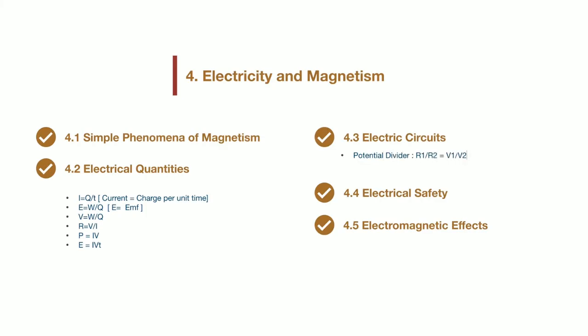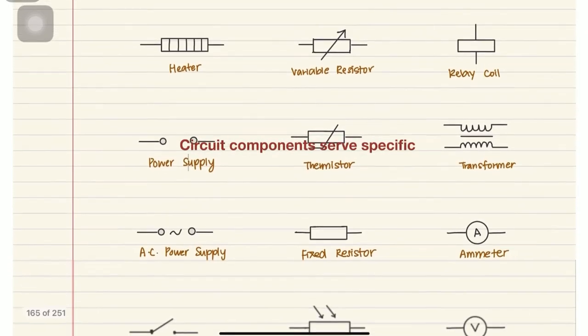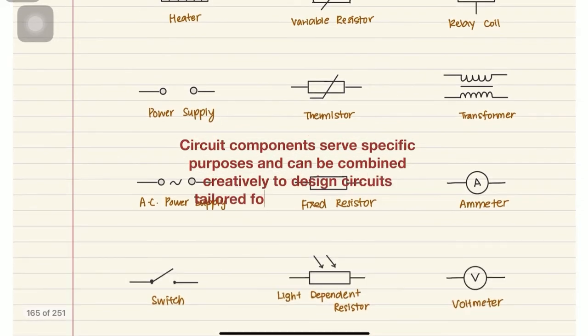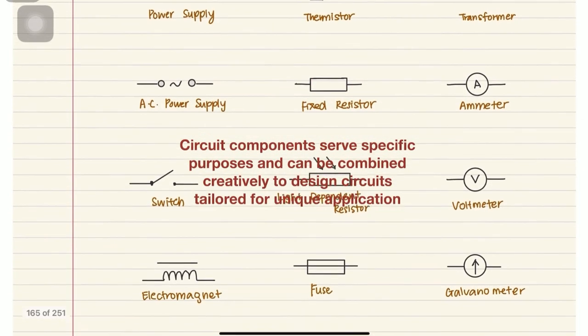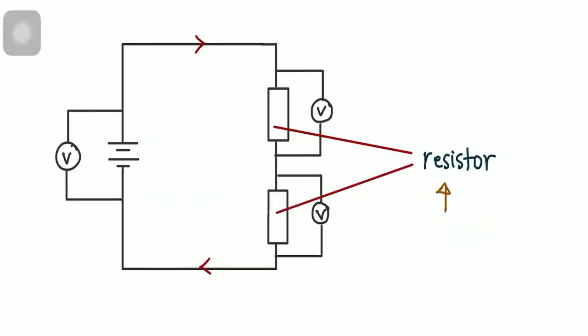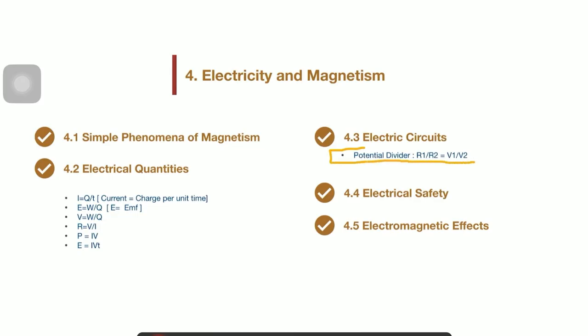Next for electric circuits, circuit components serve specific purposes and can be combined creatively to design circuits tailored for unique applications. For example, using two resistors as a potential divider can be helpful in creating specific voltage ratios. So the equation R1 over R2 equals to V1 over V2 will allow you to calculate and adjust voltage levels as needed.